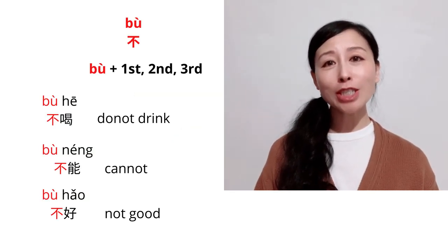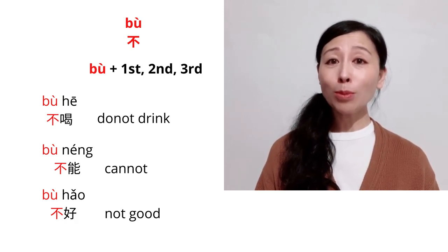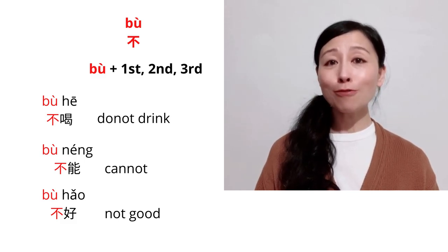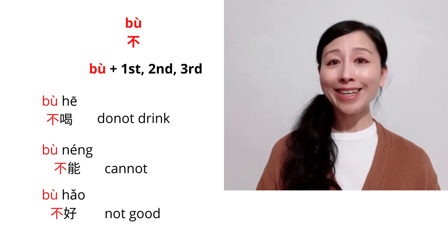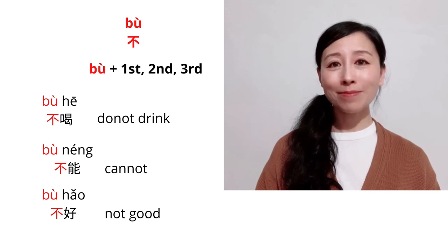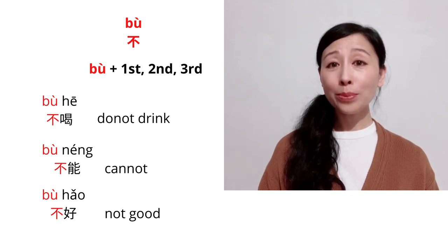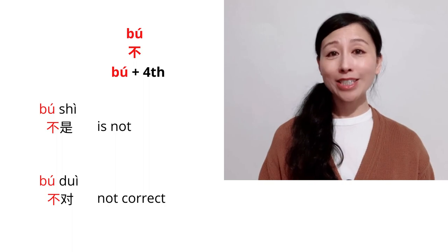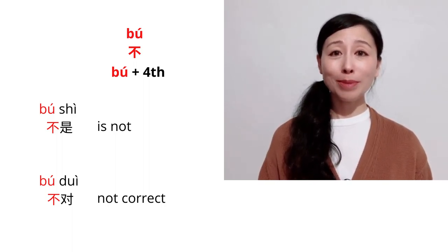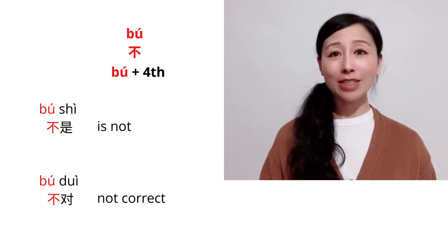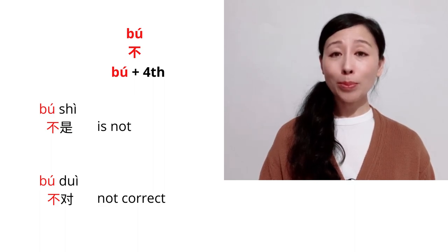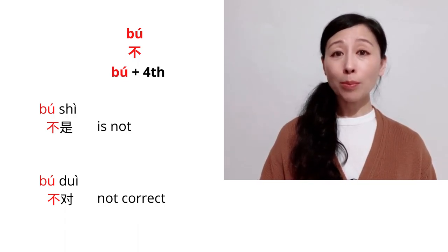Firstly, I want to talk about tone change rules about bu. In normal situations, it will be spoken as the fourth tone, followed by first tone, second tone, and third tone. For example, don't drink. But when it followed by fourth tone, the tone changed to be second tone. For example, it's not. Bù shì. Not correct. Bù duì.